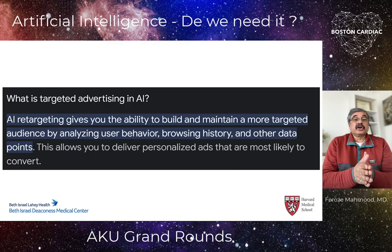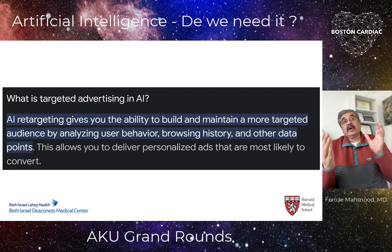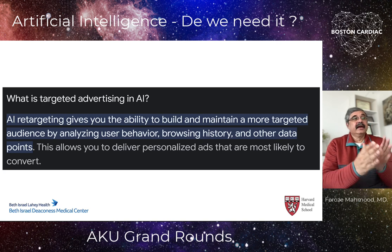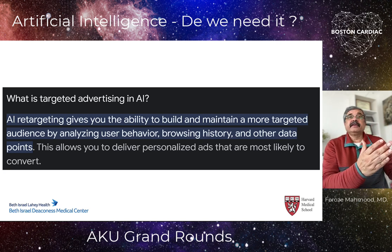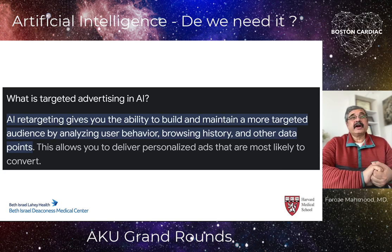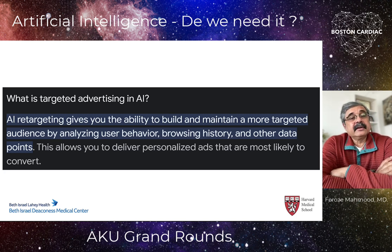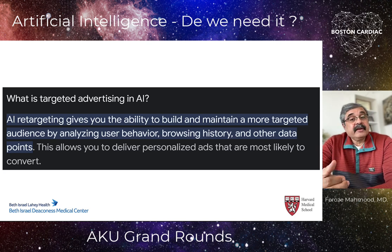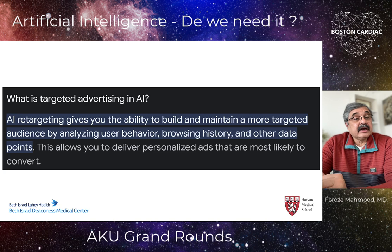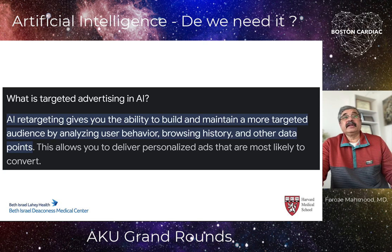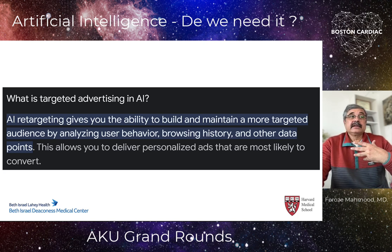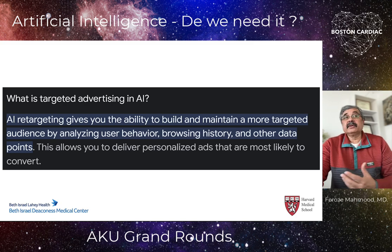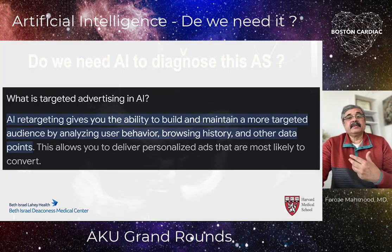Going back to targeted advertising with artificial intelligence: once the algorithm figures out what you like and dislike, it keeps isolating you from alternative information and narratives until you become less informed. Targeted advertising proudly claims it gives you the ability to build and maintain a more targeted audience by analyzing user behavior, browsing history, and other data points, delivering personalized ads more likely to convert. The only value to these developers is conversion — clicking and buying. They don't care how smart or dumb you become.